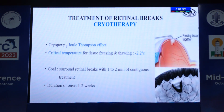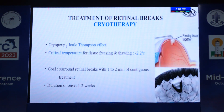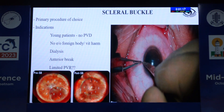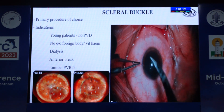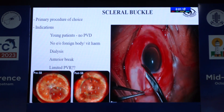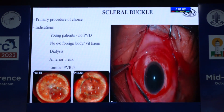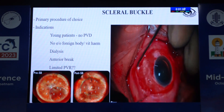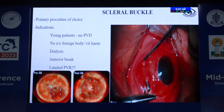Treatment modality depends upon the stage at which the patient presents. For anterior breaks, cryotherapy can be considered in cases of subclinical RD. Laser retinopexy should be done for posterior breaks, with adhesions usually seen within one week. Scleral buckling is the primary procedure of choice when there is no PVD, no evidence of foreign body or vitreous hemorrhage, and breaks are anterior.